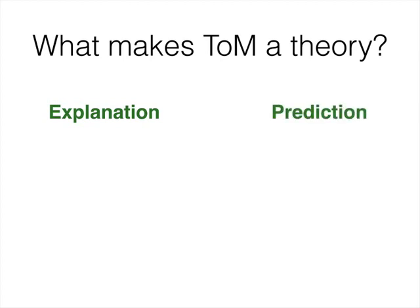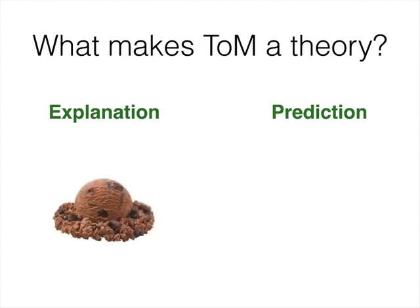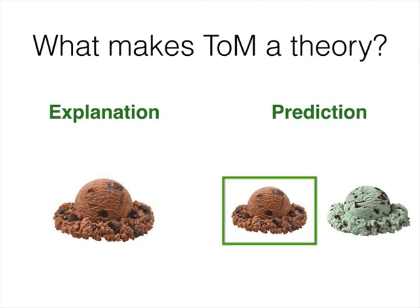For example, if you see someone choose to eat chocolate ice cream, you'll explain their behavior as an internal preference for chocolate. And you can now use this part of theory of mind to predict that they might be likely to select chocolate ice cream over, say, mint chip in the future. And it's easy to think about how explaining and predicting behavior would be a useful skill across many different situations.